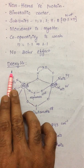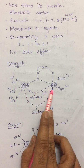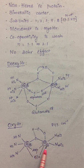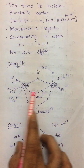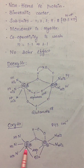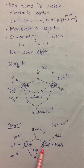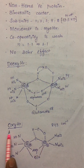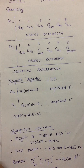In deoxyhemerythrin, the distance between the two irons is slightly longer compared to oxyhemerythrin. This is because in the deoxy form the irons are in the +2 oxidation state, whereas in the oxy form the oxidation state is raised to +3, increasing attractive forces and reducing the distance between the two irons. This reduced distance has greater importance for the magnetic properties of oxyhemerythrin.